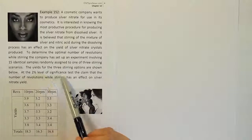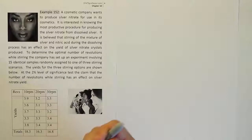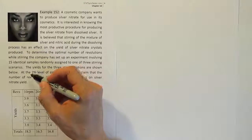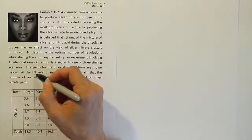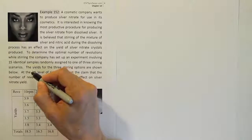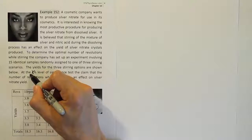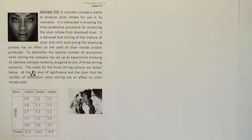At the 2% significance level, test the claim that the number of revolutions while stirring has an effect on silver nitrate yield. I'm going to change this 2% to 2.5%, actually. The reason we're going to do that is because our tables don't have a table for 2%, so we're not going to be allowed to use 2% here. So let's use 2.5%. So forgive me for that oversight. So there's the 2.5% level of significance and let's go ahead and work out the problem now.